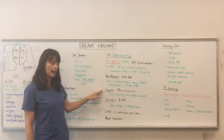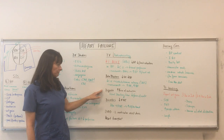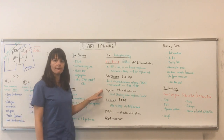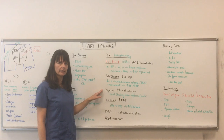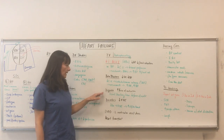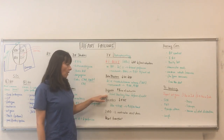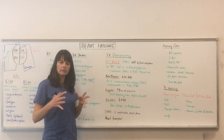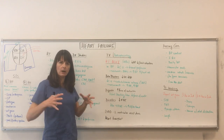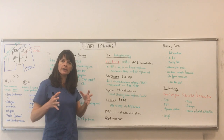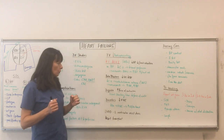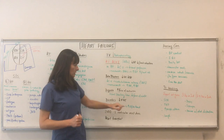Digoxin is a cardiac glycoside. If you watch the other video I have on preload, afterload and contractility, it discusses digoxin in more detail. But there's the Frank-Starling law, which basically means that when that heart muscle wears out, the cardiac fibers cannot contract efficiently to produce that cardiac output.